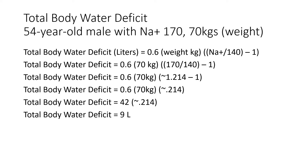Now following order of operations, we multiply 0.6 by 70 kilograms to get 42. Then 42 multiplied by 0.214 equals 9 liters of total body water deficit.